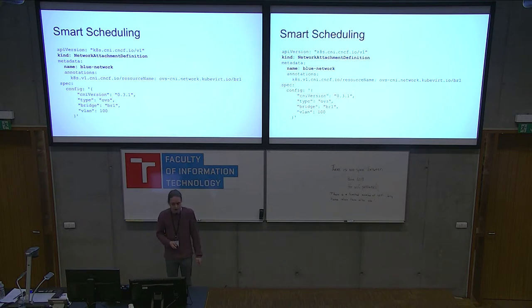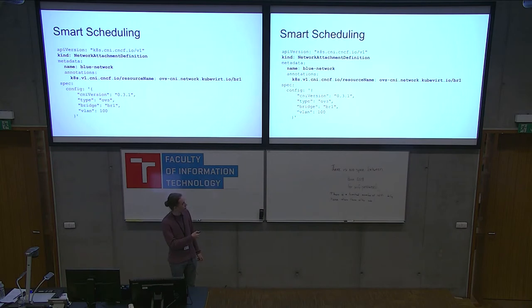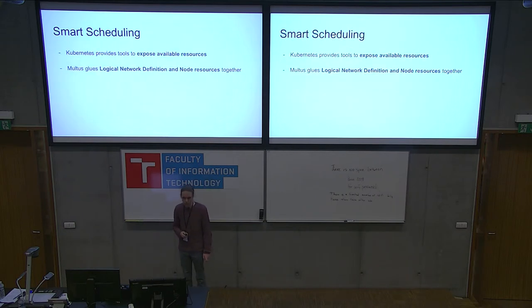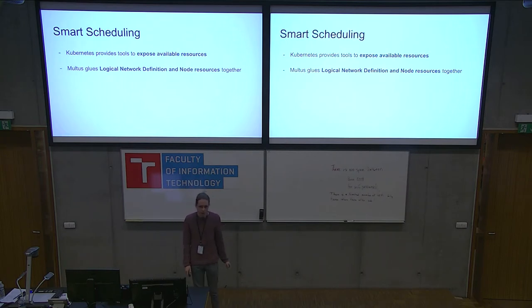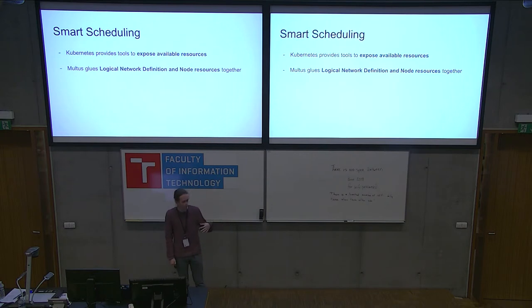It's handled using Multus and the de facto standard. There is an additional annotation in the network attachment definition that says: schedule me on a node with this resource available when a pod requests this network. To wrap up smart scheduling: Kubernetes provides enough tools to implement these scenarios, but it can be tedious to do yourself, so Multus and the de facto standard glue together the logical network definition and scheduling.